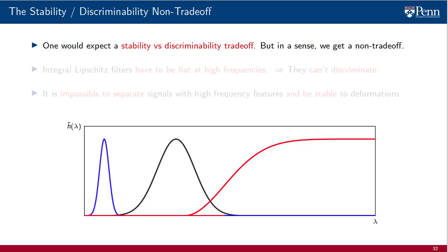This is somewhat unexpected. When analyzing a learning parametrization, it is natural to expect a stability versus discriminability trade-off. A less stable model is more discriminative, while a more stable model is less discriminative. But the appearance of integral Lipschitz filters means that, in a sense, we get a non-trade-off.